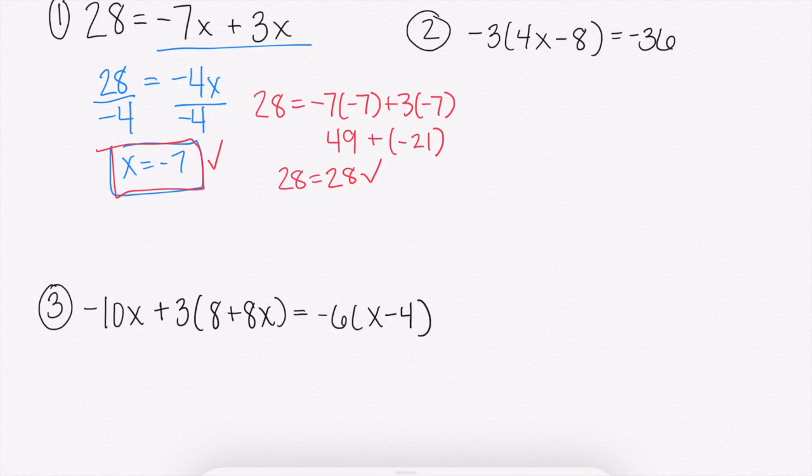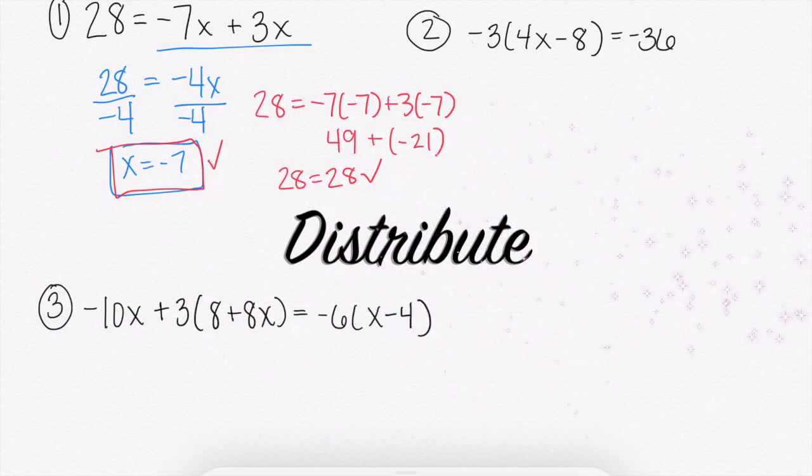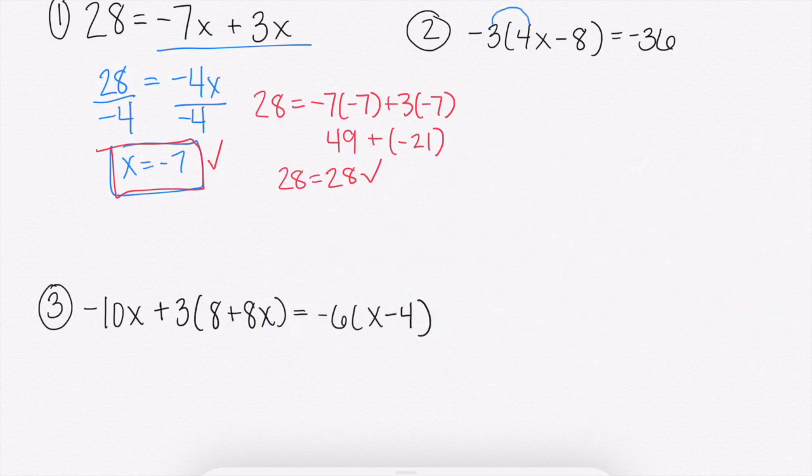Number 2, we have parentheses. So whenever you have parentheses with a number on the outside, not separated by a add or subtract sign, that means we need to distribute, which means multiply onto every term on the inside. So we have 4x and negative 8. So we need our negative 3 to go onto both of those. If you would like to see a video on how to distribute a more in-depth video, go ahead and comment that down below or any other videos you'd like to see.